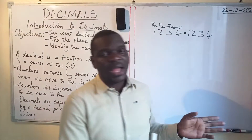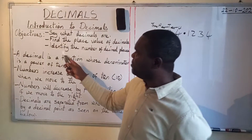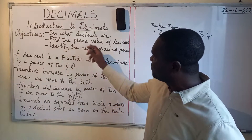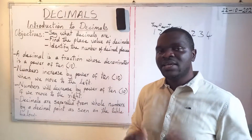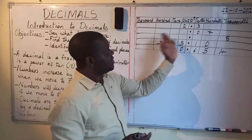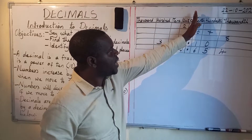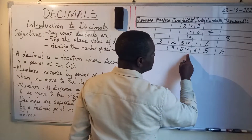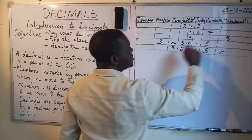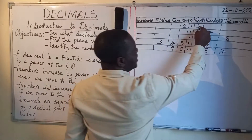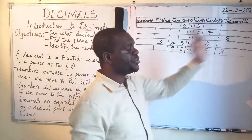Numbers increase by a power of 10 when we move to the left. For instance, if you have a number like 1, 2, 3, 4 — moving to the left, you increase by a power of 10. This position is units; moving left gives you 10, then 100, then 1,000, and so forth. These are all powers of 10.